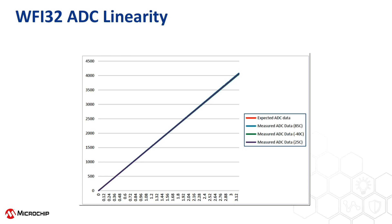To visualize this specification more straightforwardly, we can plot the reported output voltage for a linear ramp input. As you can see here, the reported output follows the input across the temperature very closely. What you see here is the best-in-class performance of WFI32.